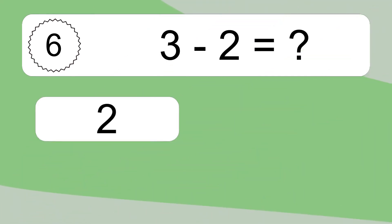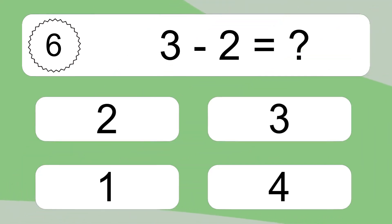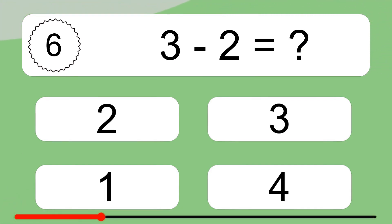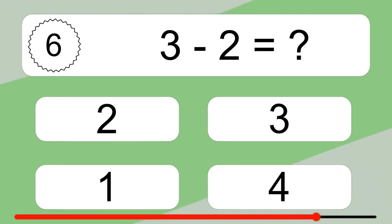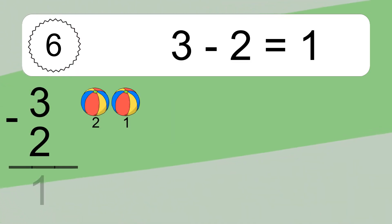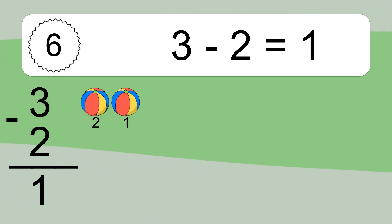3 minus 2 equals what? 3 minus 2 equals 1. Let's count it: 2, 1.